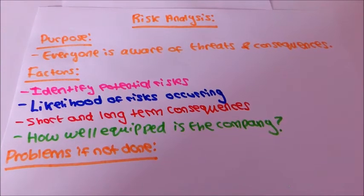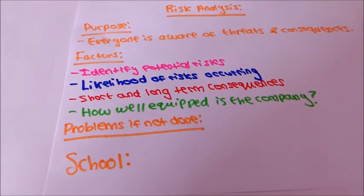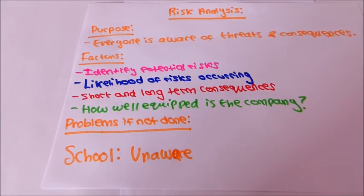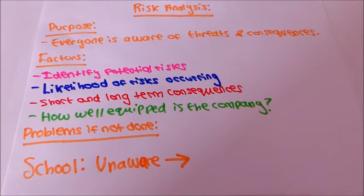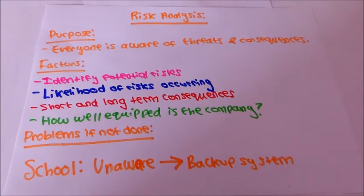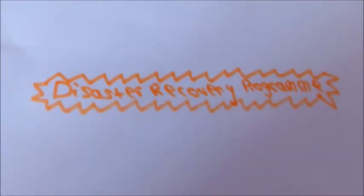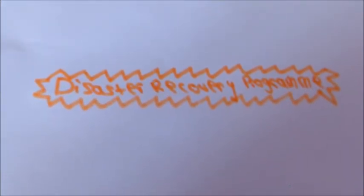There are many problems if risk analysis is not done. In a school there may be a problem such as staff are unaware who is in college which could be dangerous if there was a fire. The problem could be minimised by having a backup system which staff could have emergency access to to look up information. The organisation also needs to think about having a disaster recovery programme.